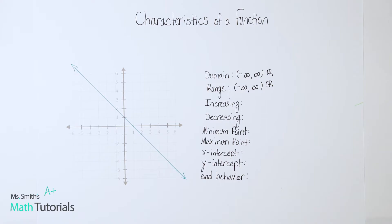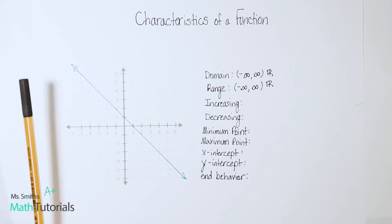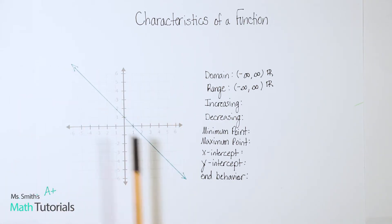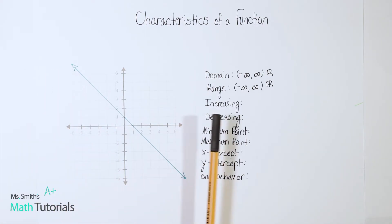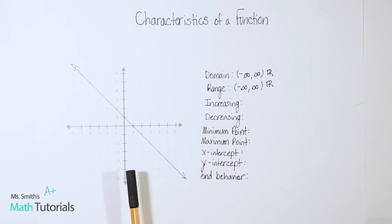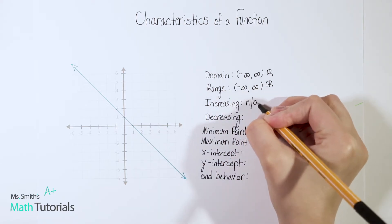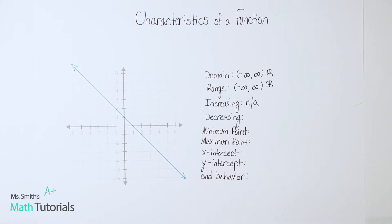Increasing and decreasing are kind of tricky. We just have to remember that for increasing and decreasing we only look at the x-axis — we don't care about y at all. The other important thing is that we read this graph left to right, always, just like a book. Looking at this graph reading it left to right, I see that we're moving down — it's like going down a roller coaster. So this graph does not increase at all. There is none. Don't put zero because zero is a number; just put N/A or none.